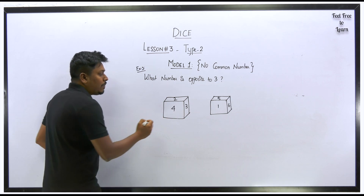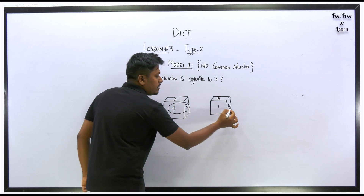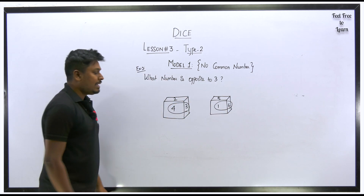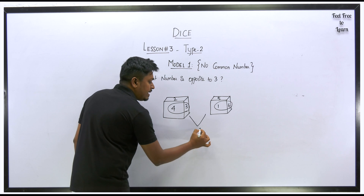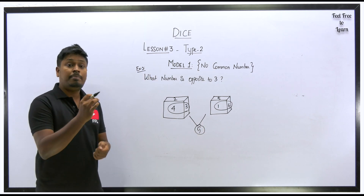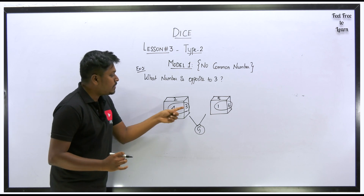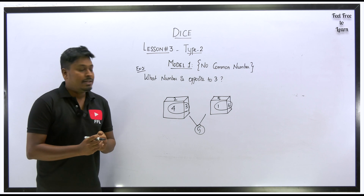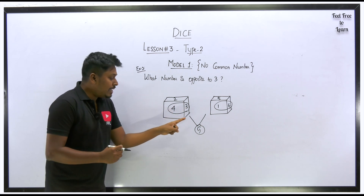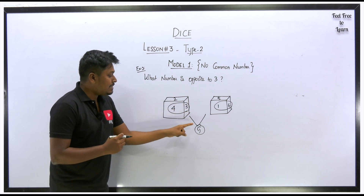Looking at the diagrams, adding adjacent faces 4 and 3 gives 7, and in the second diagram 6 and 1 also gives 7. Since two adjacent faces sum to 7, this is a general dice — not a standard dice. For a standard dice the sum of opposite faces is 7, but for a general dice the sum of any two adjacent faces can be 7.